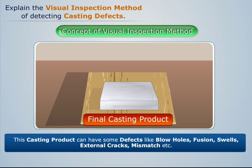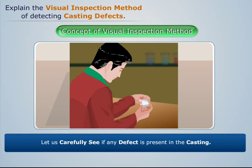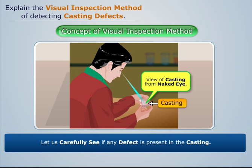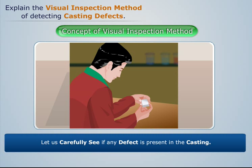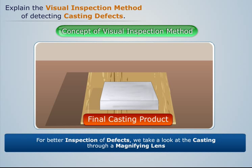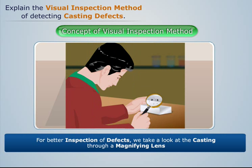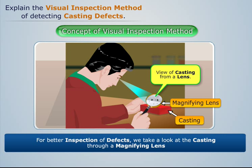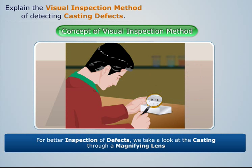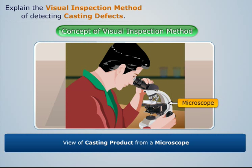So let us carefully see if any defect is present in the casting. For better inspection of defects, we take a look at the casting through a magnifying lens or a microscope.